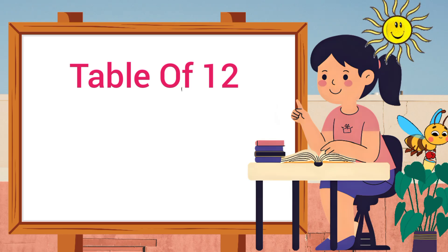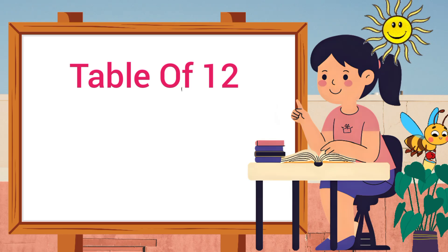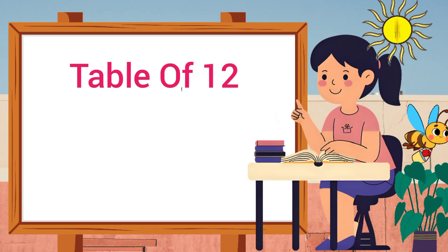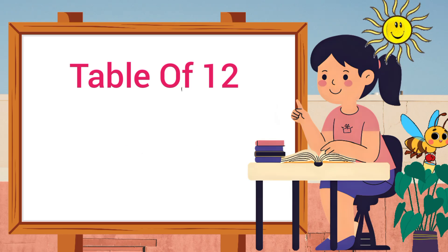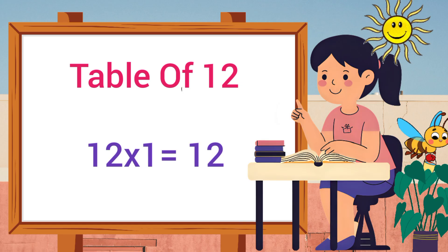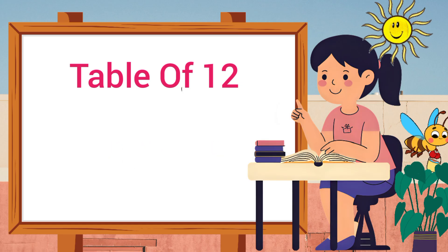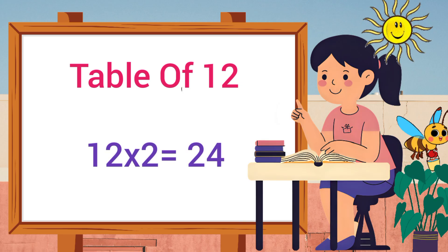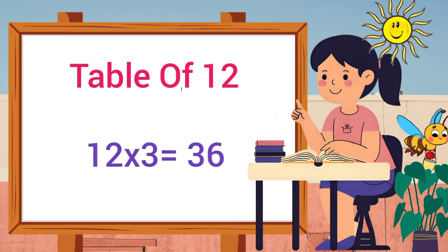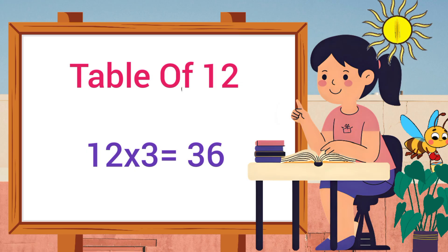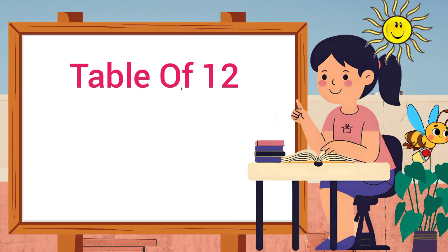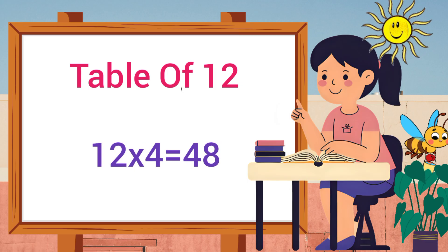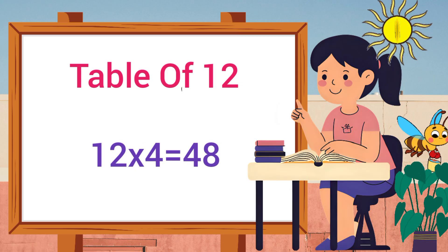Let's learn table of twelve. Twelve ones are twelve, twelve twos are twenty-four, twelve threes are thirty-six, twelve fours are forty-eight.